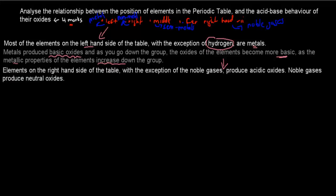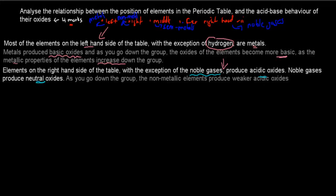Now for the right-hand side — the non-metals. Elements on the right-hand side of the table, with the exception of noble gases, produce acidic oxides. Noble gases produce neutral oxides. And as you go down the group, the non-metallic elements produce weaker acidic oxides, because down the group the non-metallic properties decrease.